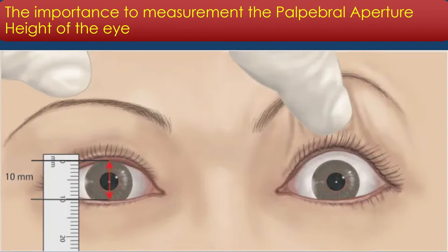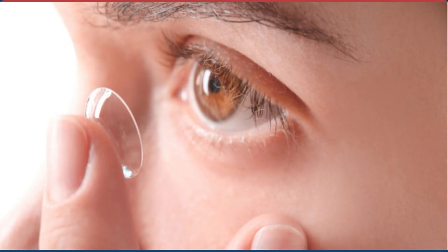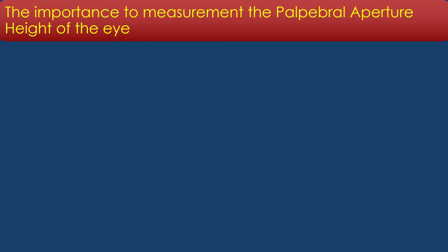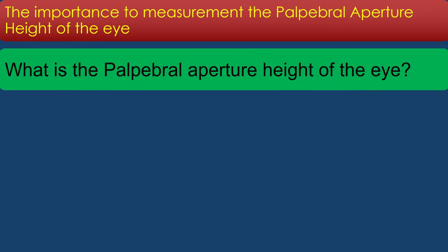Measuring the palpebral aperture height of the eye will help to determine the overall diameter of contact lens selection for optimum patient comfort, similar to the horizontal visible iris diameter. Let's know what is the palpebral aperture height of the eye.